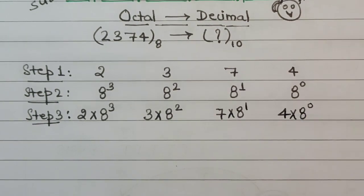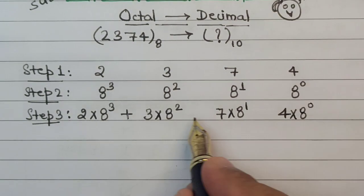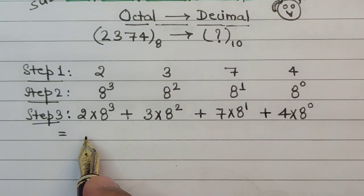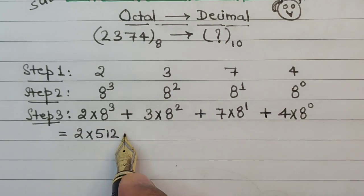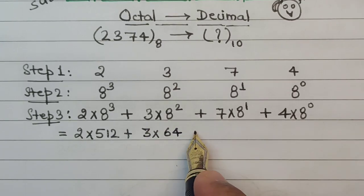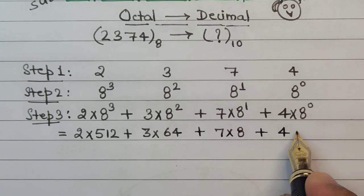After this, all we have to do is just add these numbers. So then in the next line we'll have our answer. This will be 2 multiplied by 512, then we have 3 multiplied by 64, then we have 7 multiplied by 8, and then we have 4 multiplied by 1.